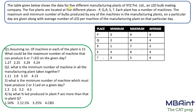Now let's read this set. The table given below shows data of five different manufacturing plants of XYZ Private Limited, an LED bulb making company. The five plants are located at five different places: P, Q, R, S, T. Each plant has a number of machines. The minimum and maximum number of bulbs produced by any machine in the plant on a particular day are given, along with the average number of LEDs per machine for that day.